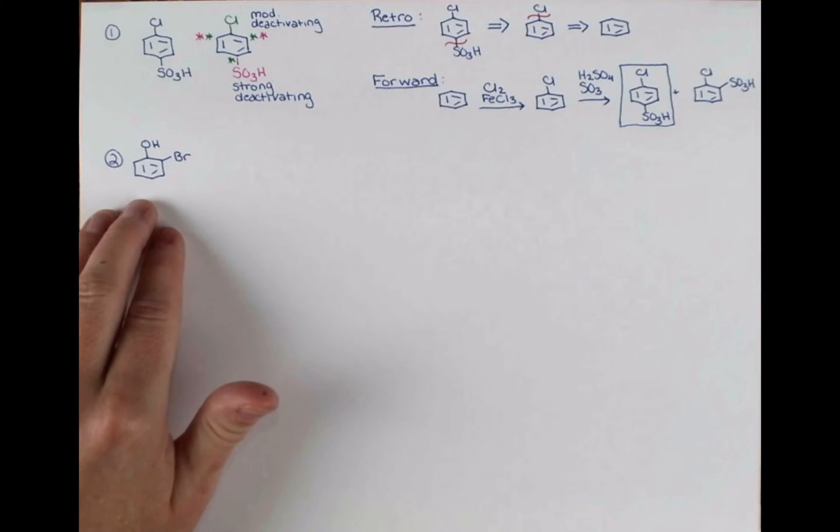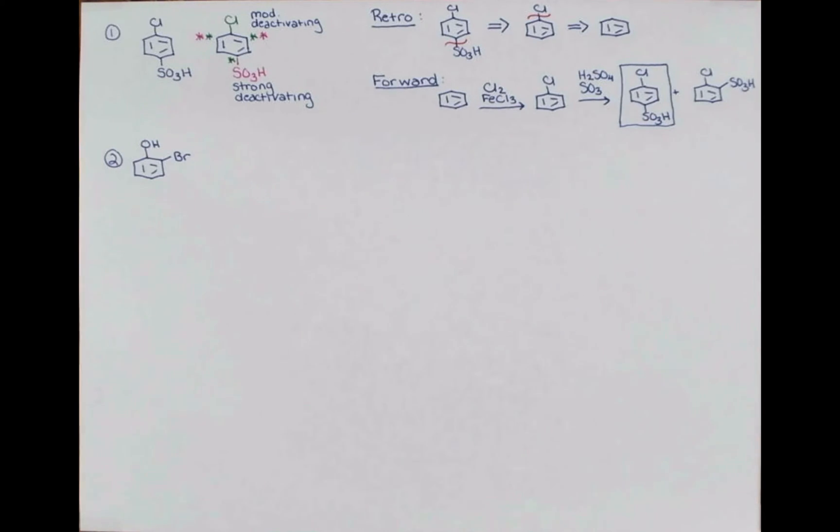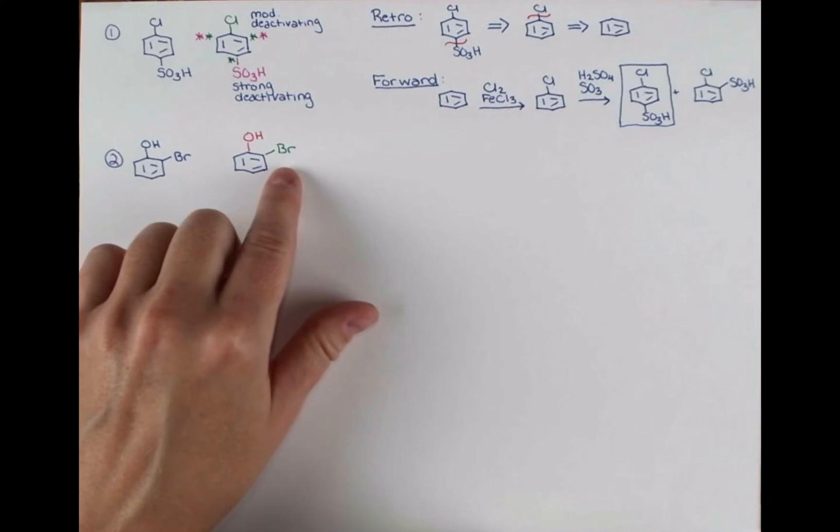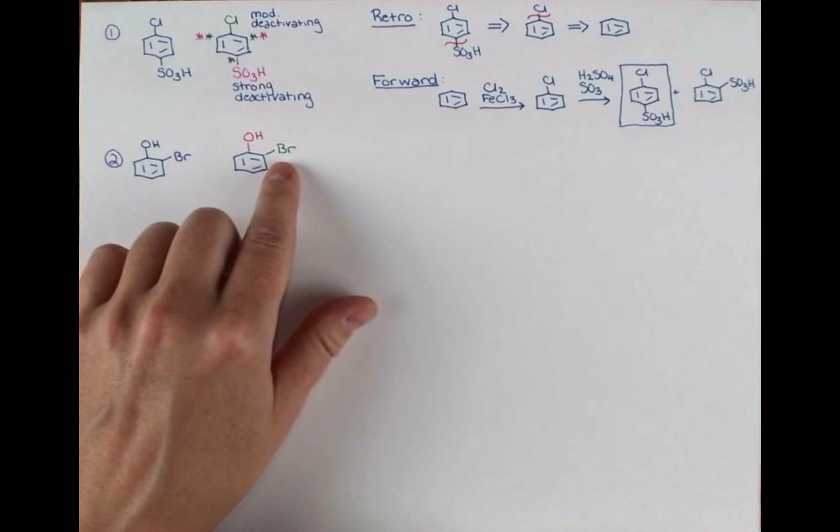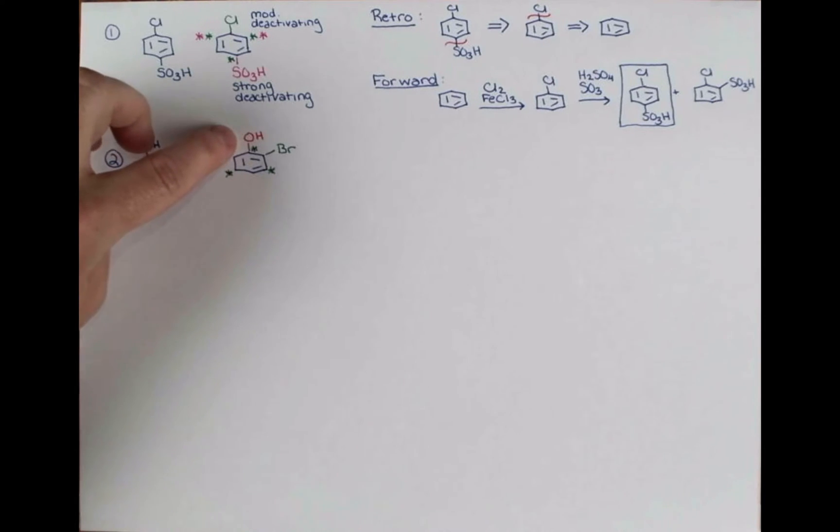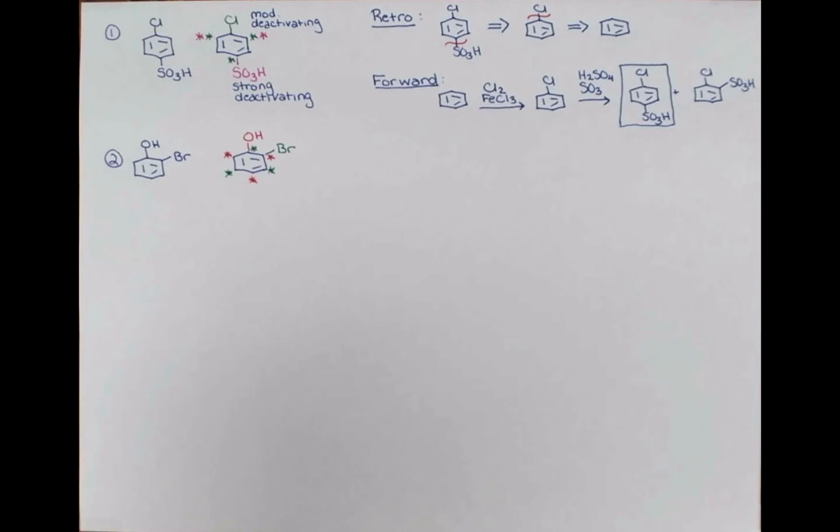Let's redraw our molecule with some color so we can do our evaluation of the groups. Again, we have a halogen. I just colored it green again. This is going to direct ortho-para to itself. Hey, and that looks pretty good. That's where we need an OH group. And our hydroxyl group is also going to direct ortho-para to itself. Okay, that directs where we need the bromine.